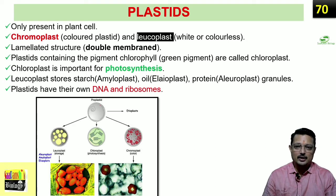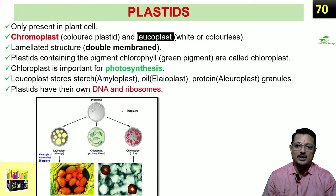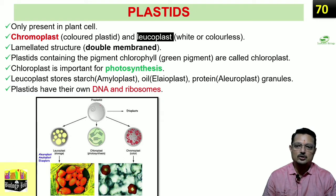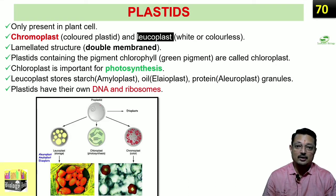To quickly review plastids: they are present only in plant cells — this is important to remember. Plastids are double membrane structures, and they are divided based on the pigments they contain. Focus more on chloroplast because it is important for photosynthesis. Leucoplast function is storage — amyloplasts store starch, elaioplasts store oil, and aleuroplasts store protein. They have their own DNA and ribosomes, so there is genetic material available with this organelle, making them semi-autonomous.